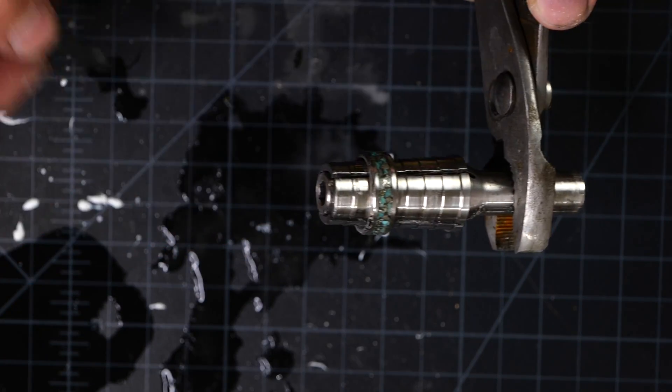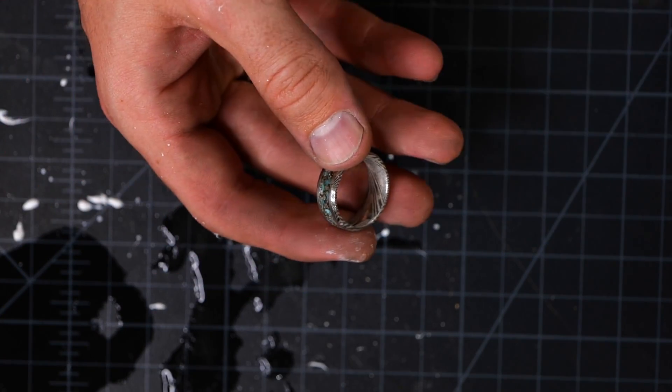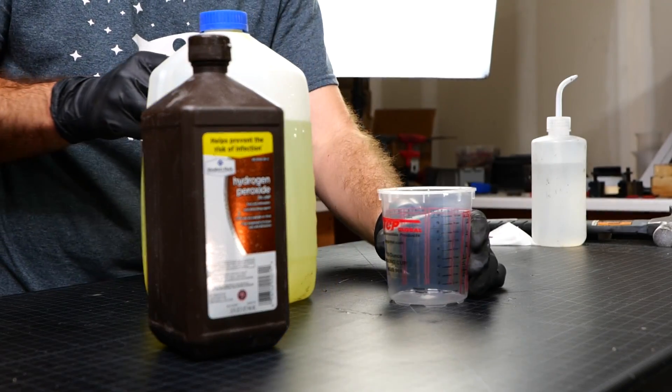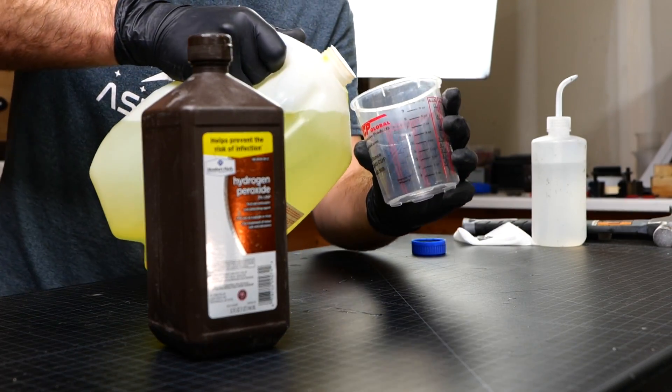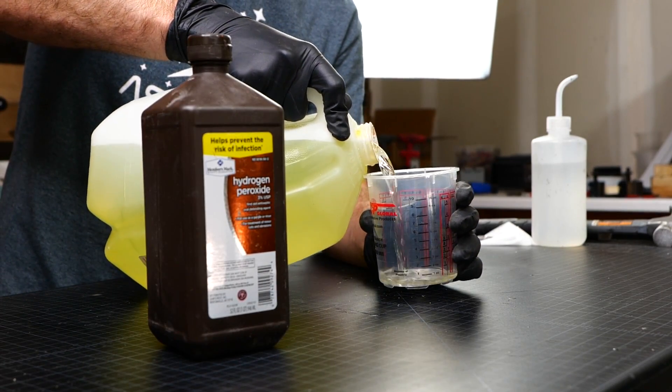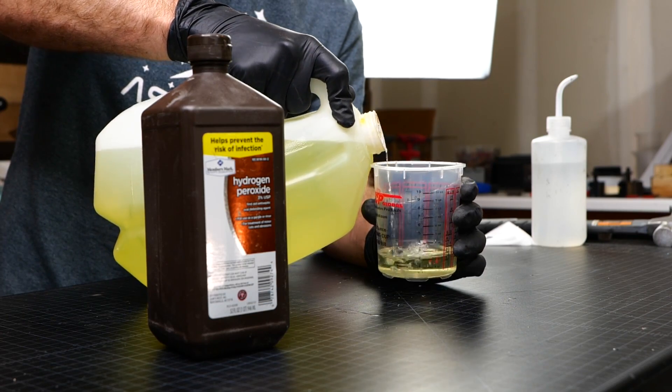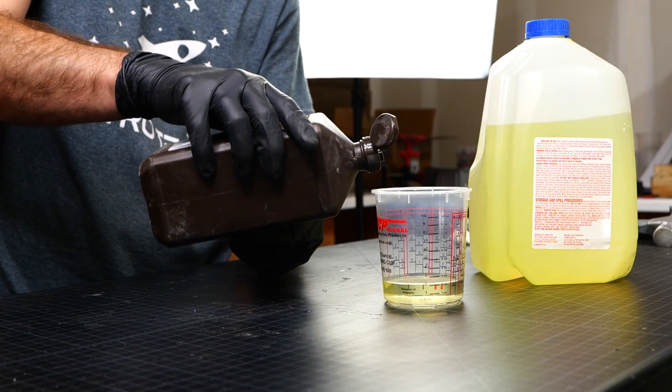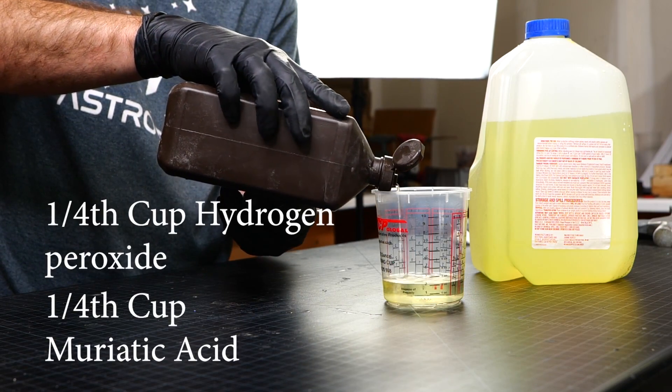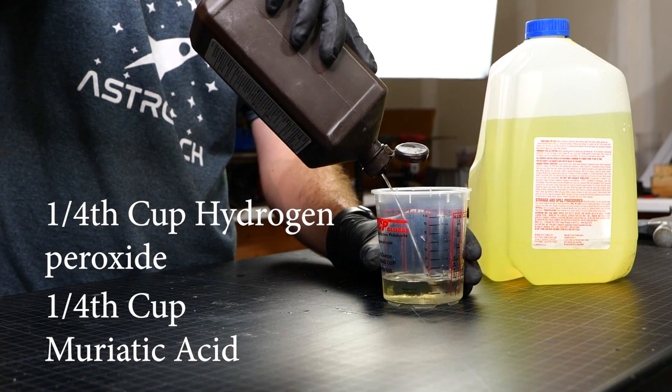Now because this is a Damascus steel ring, we need to etch it in order to reveal the pattern that we sanded away when we were sanding down that inlay. So this step, you definitely want to take all of the correct safety precautions for. We're using muriatic acid, which is quite dangerous. If you're under 18, you absolutely should do this with the supervision of an adult. But we're just going to be using normal muriatic acid and normal hydrogen peroxide. You can get both of these from your local Home Depot.